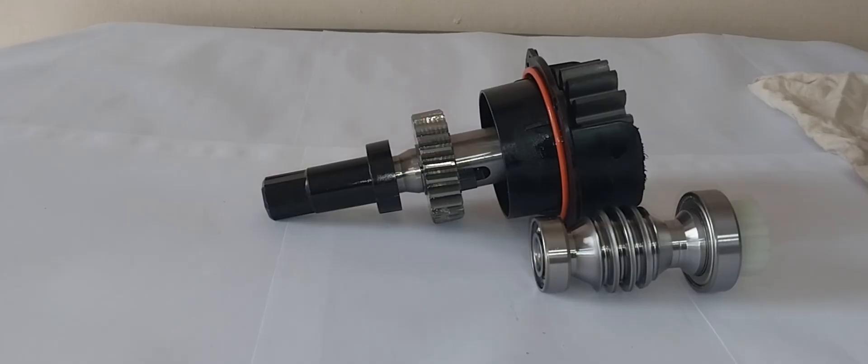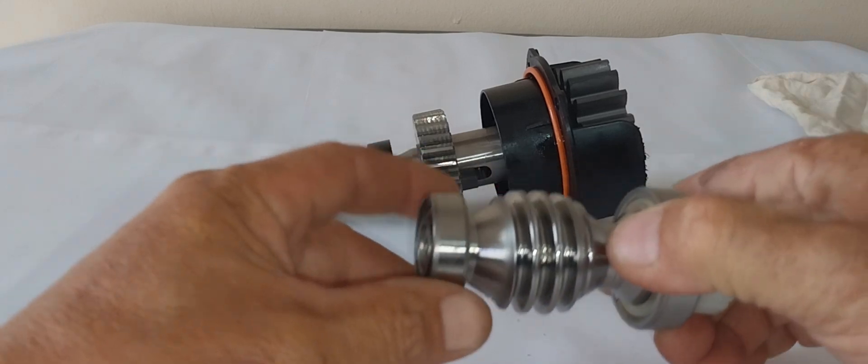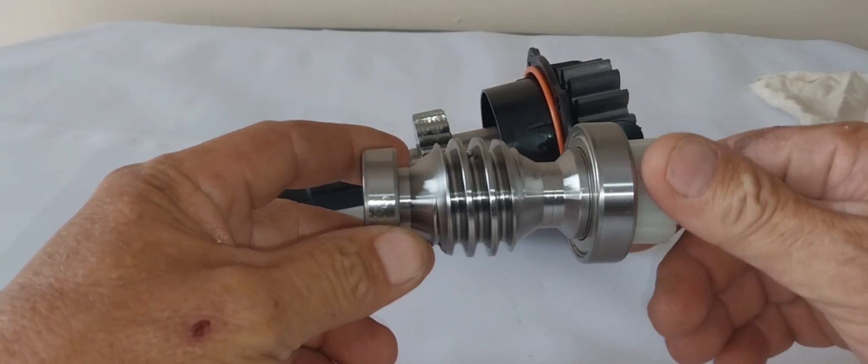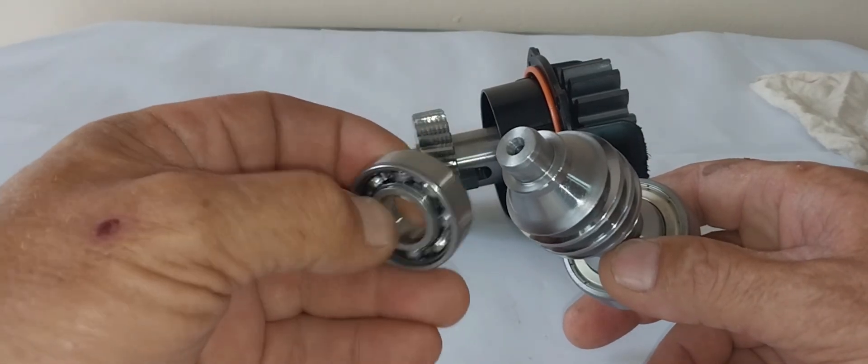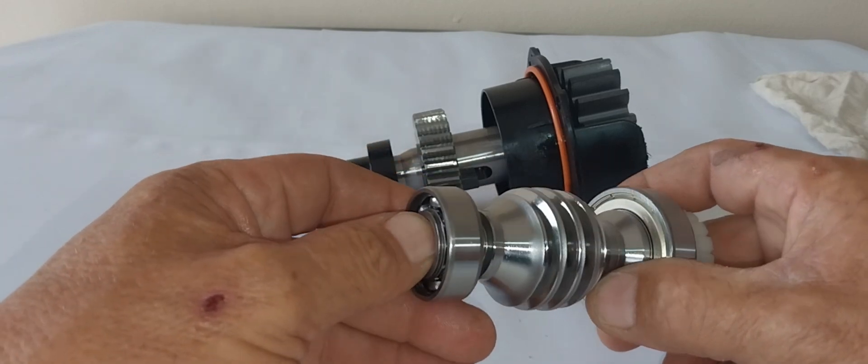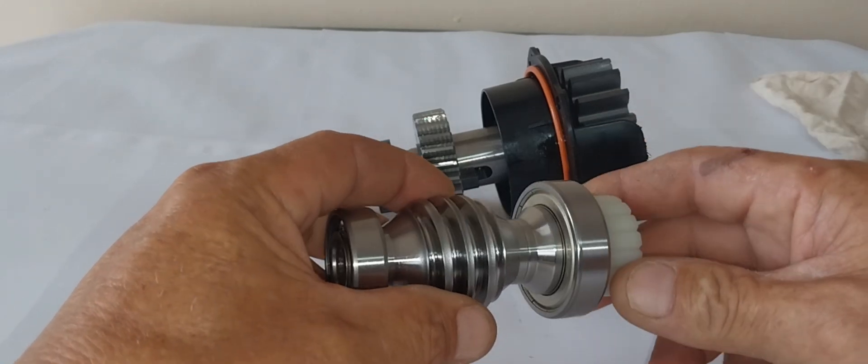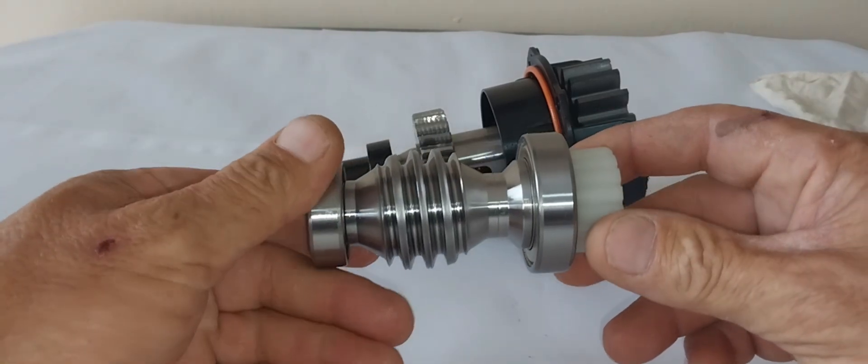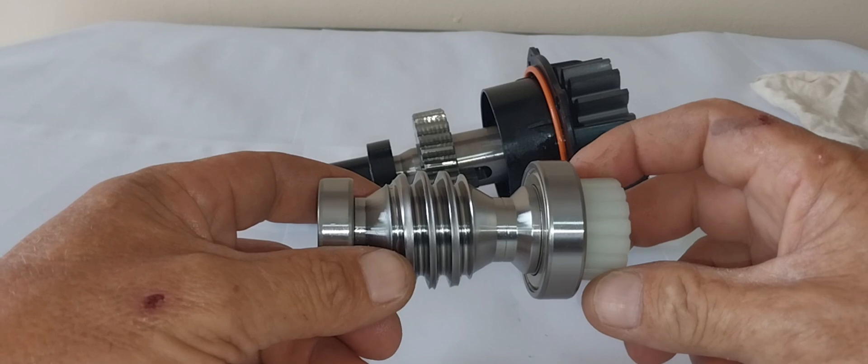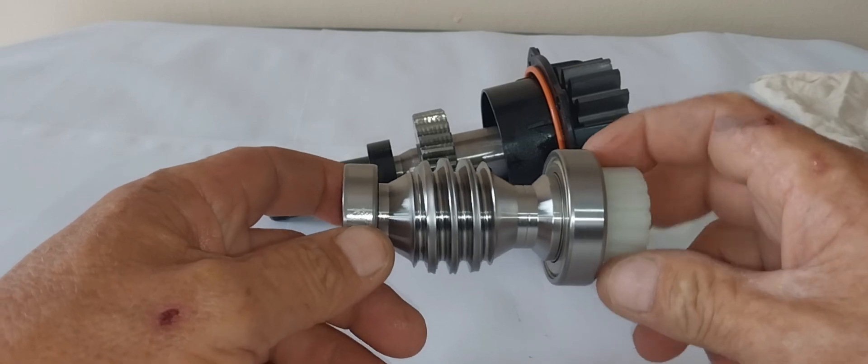In a nutshell, this is basically the gearbox system of a Centurion D6 smart. You can see it's completely made of steel, got two bearings. Bottom bearing is open-sided bearing and then the top side bearing is sealed. You've got a plastic coupling that connects into your electrical motor. It's a very short stubby thick main worm gear.